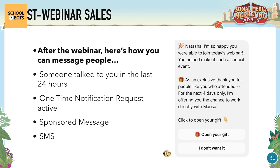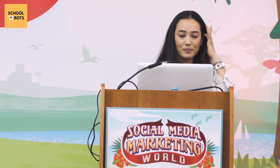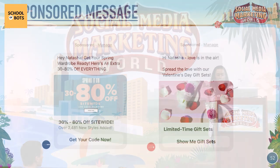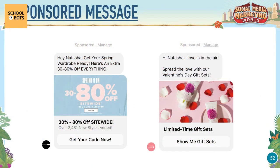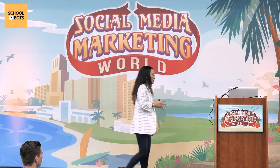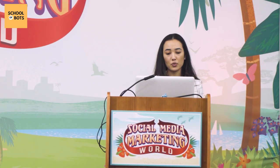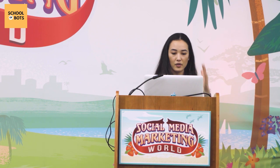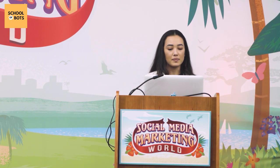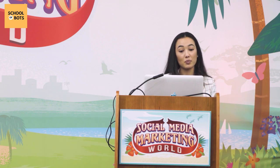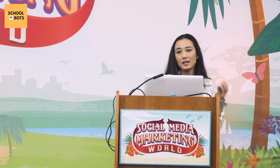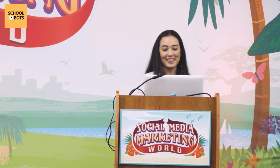After the webinar, here are four ways to message people: someone who talked to you in the last 24 hours; someone for whom a one-time notification request is active; a sponsored message — which looks just like a regular message except it says 'sponsored' at the top, can include graphics and custom text, and is great for hot post-webinar leads, especially those you know attended; and of course SMS.